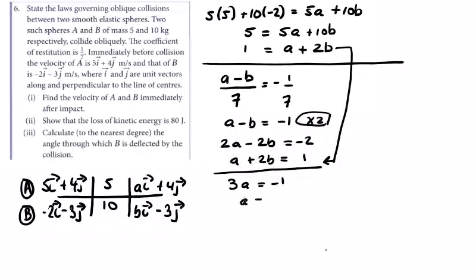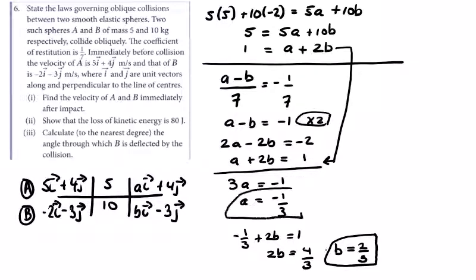So 3a equals minus 1, meaning a equals minus 1/3. Substituting back: minus 1/3 plus 2b equals 1, which gives 2b equals 4/3, so b equals 2/3.